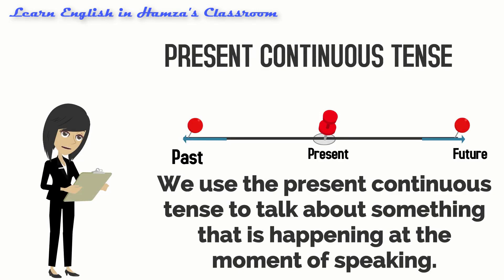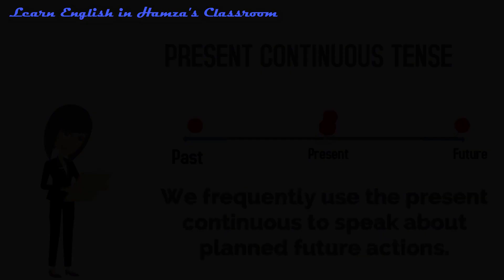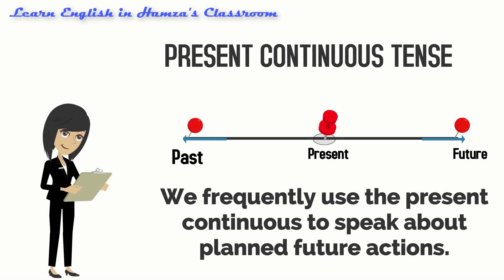We use the present continuous tense to talk about something that is happening at the moment of speaking. We also use it to describe a temporary event or situation, and we frequently use the present continuous to speak about planned future actions.